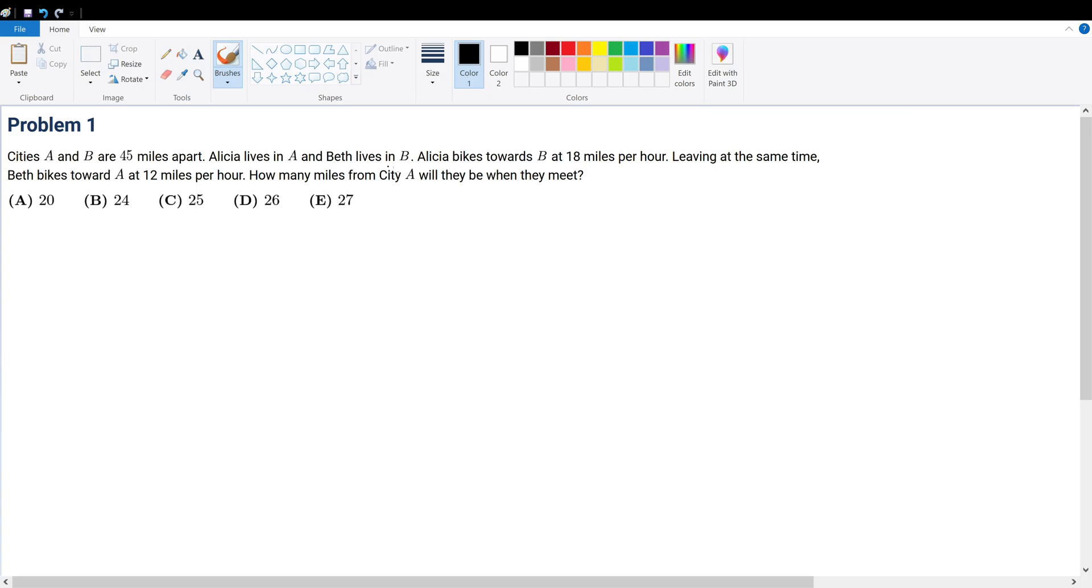Problem 1: Cities A and B are 45 miles apart. Alisa lives in city A and Beth lives in city B. Alisa bikes towards B at 18 miles per hour.